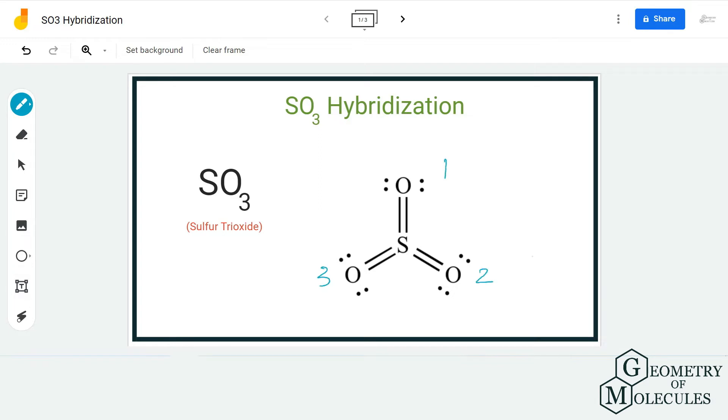As a result, the steric number is three because there are three electron regions around the sulfur atom. So this is one way to find out the hybridization.